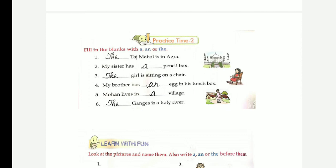Mohan lives in a village. V, consonant sound, so we use 'a'. The Ganges is a holy river. The, why? We use 'the' before the names of rivers. Okay, so we use here the Taj Mahal is in Agra, my sister has a pencil box, the girl is sitting on a chair, my brother has an egg in his lunch box, Mohan lives in a village, the Ganges is a holy river.